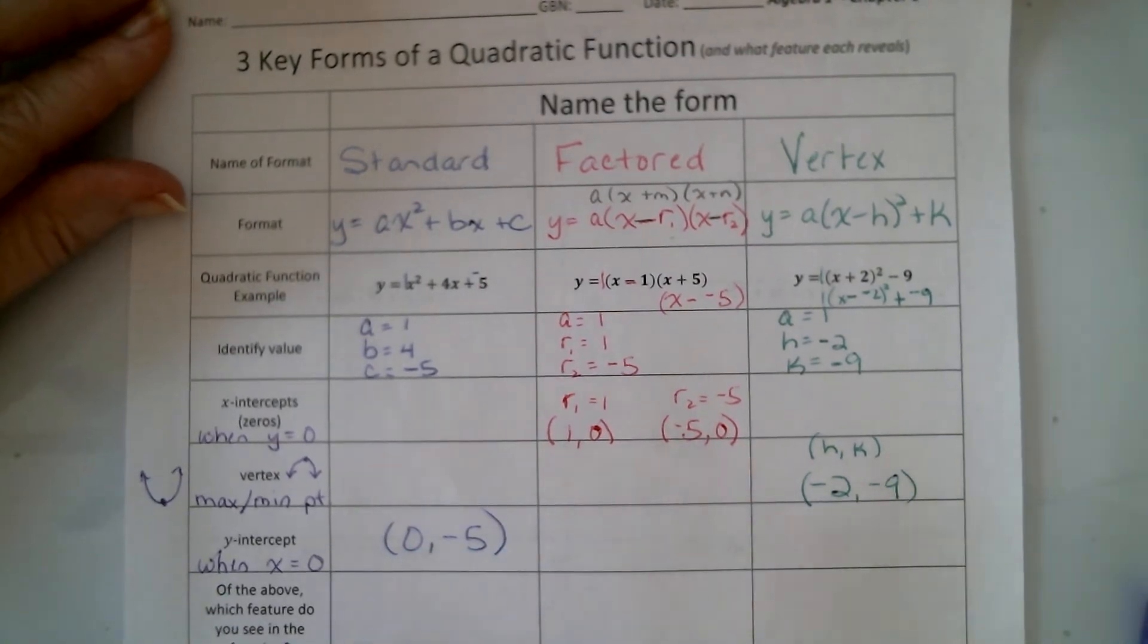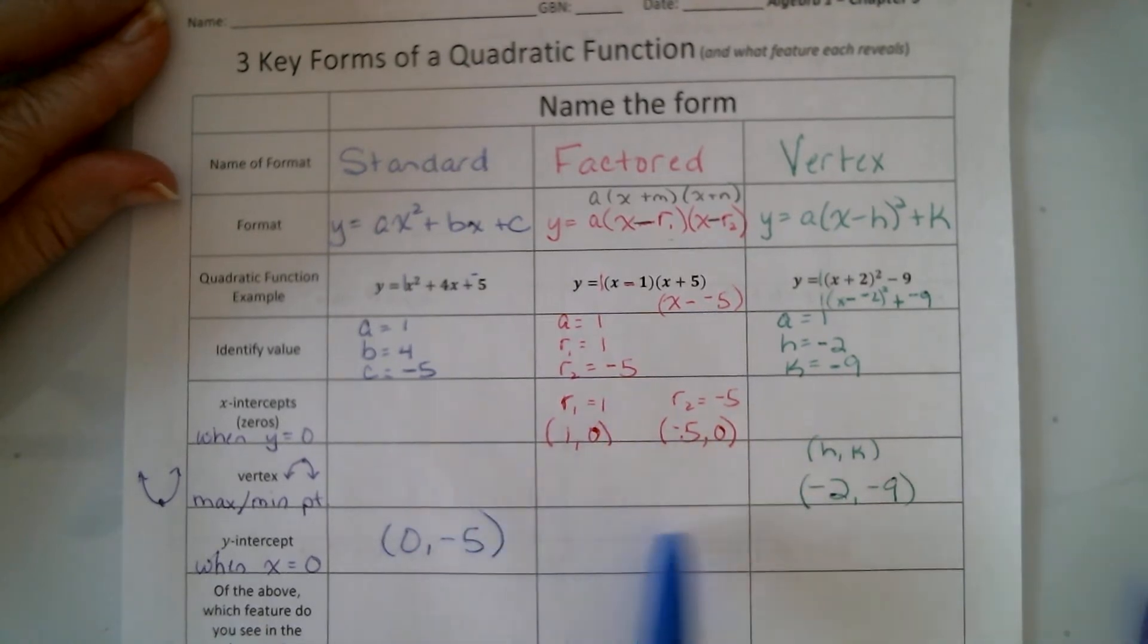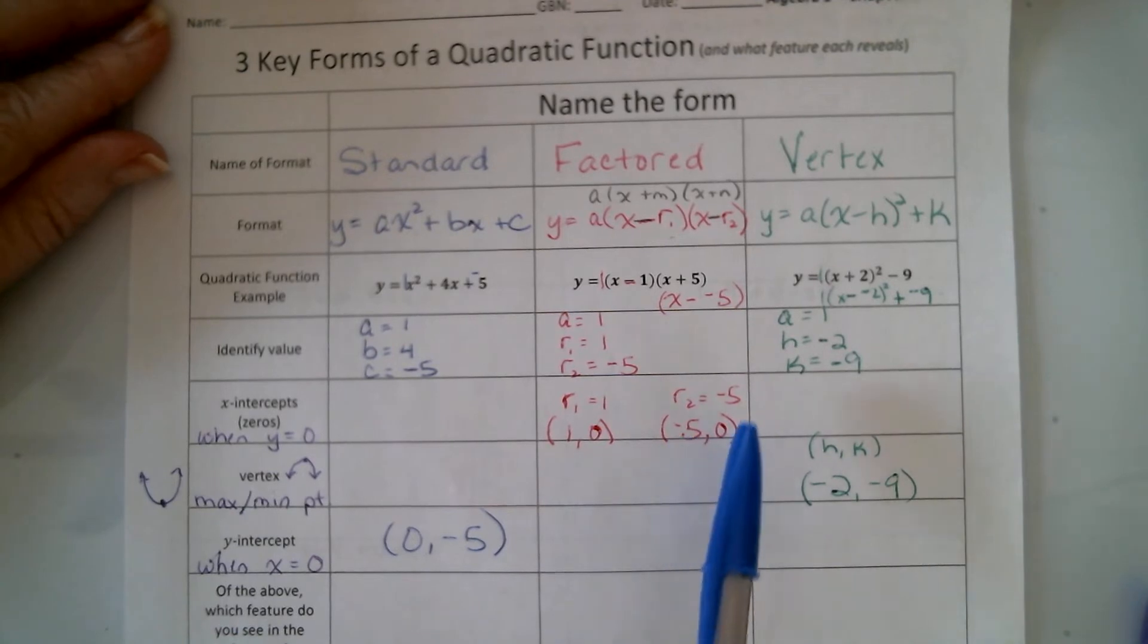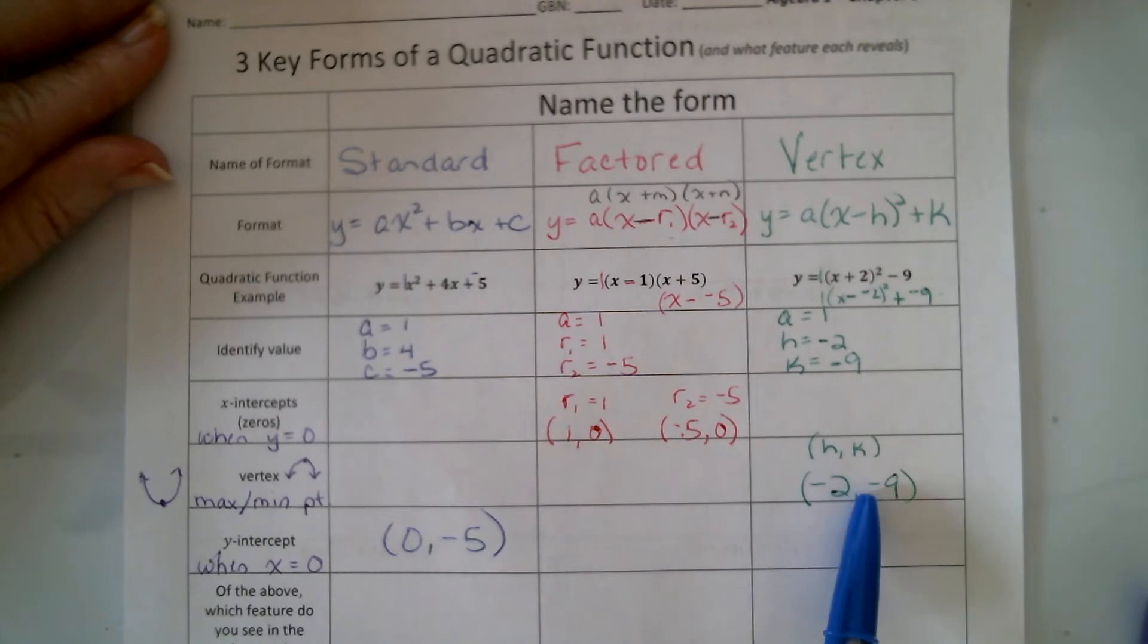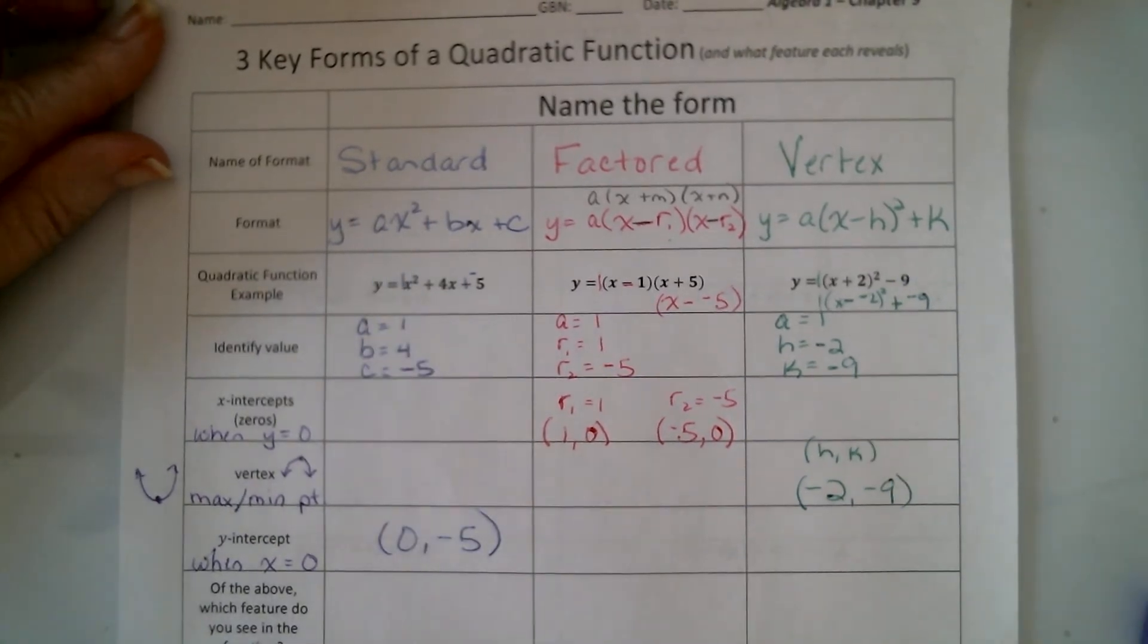Okay, so hopefully you took a pause when you were asked to find some of these points given the format that we had, that it was easiest for us to find the zeros in factored form, the vertex in vertex form, and the y-intercept in standard form.